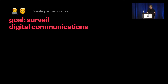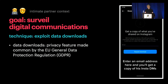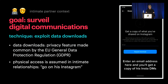In the intimate partner context, for instigators who wanted to surveil digital communications, one technique we observed was exploiting data downloads. Data downloads are a privacy feature made common by GDPR's right of access. For example, you can download a copy of the information you've shared with Instagram, including all sent messages. The video suggests entering the instigator's email address in the data download request form, so that the instigator is sent a copy of the target's Instagram direct messages. In this scenario, physical access to the target's device is assumed—the video's first instruction is 'just go on his Instagram'—because in close relationships, the common assumption of one person's perfectly secure device does not hold up.